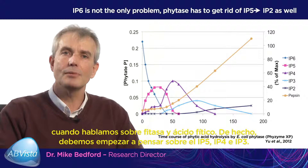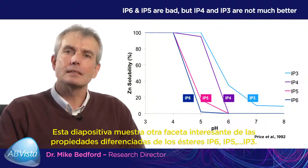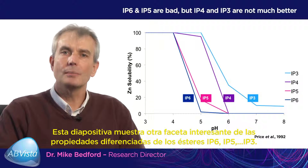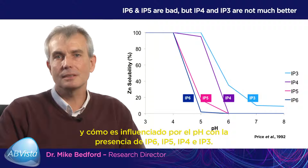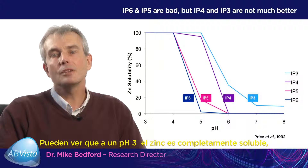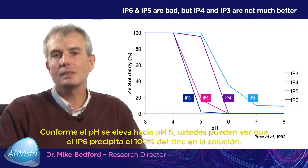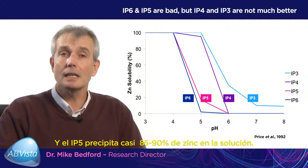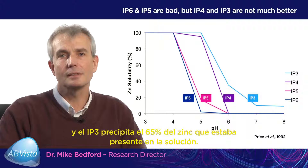We've got to start thinking about IP5, IP4, and IP3. This visual shows another interesting facet of the differential properties of the esters IP6, IP5, IP4, and IP3. On the y-axis is the solubility of zinc and how it's influenced by pH in the presence of IP6, IP5, IP4, and IP3. At pH 3, zinc is 100% soluble regardless of whether IP6, IP5, IP4, or IP3 is present. As pH rises towards pH 5, IP6 precipitates 100% of the zinc and IP5 precipitates almost 85-90% of the zinc. At pH 6, IP4 is precipitating 100% of the zinc and IP3 is precipitating 65% of the zinc present in the solution.